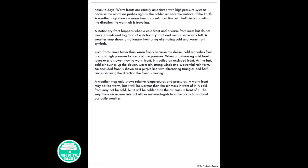Cold fronts move faster than warm fronts because the dense cold air rushes from areas of high pressure to areas of low pressure. When a fast moving cold front takes over a slower moving warm front, it is called an occluded front. As the fast cold air pushes up the slower warm air, strong winds and substantial rain form. An occluded front is shown as a purple line with alternating triangles and half circles showing the direction the front is moving.